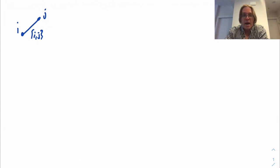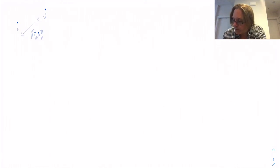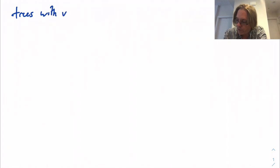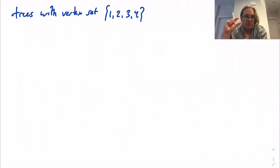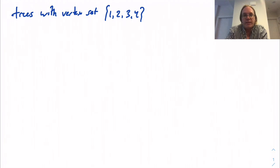In this setting, we can ask natural questions like: how many trees have vertex set {1, 2, 3, 4}? Let's look at trees with vertex set {1, 2, 3, 4}. The idea is I'm going to be treating the edge between i and j as already named — the doubleton {i, j}. So when you draw such a tree, you don't really need to label the edges. Those are forced. And now we can just count.